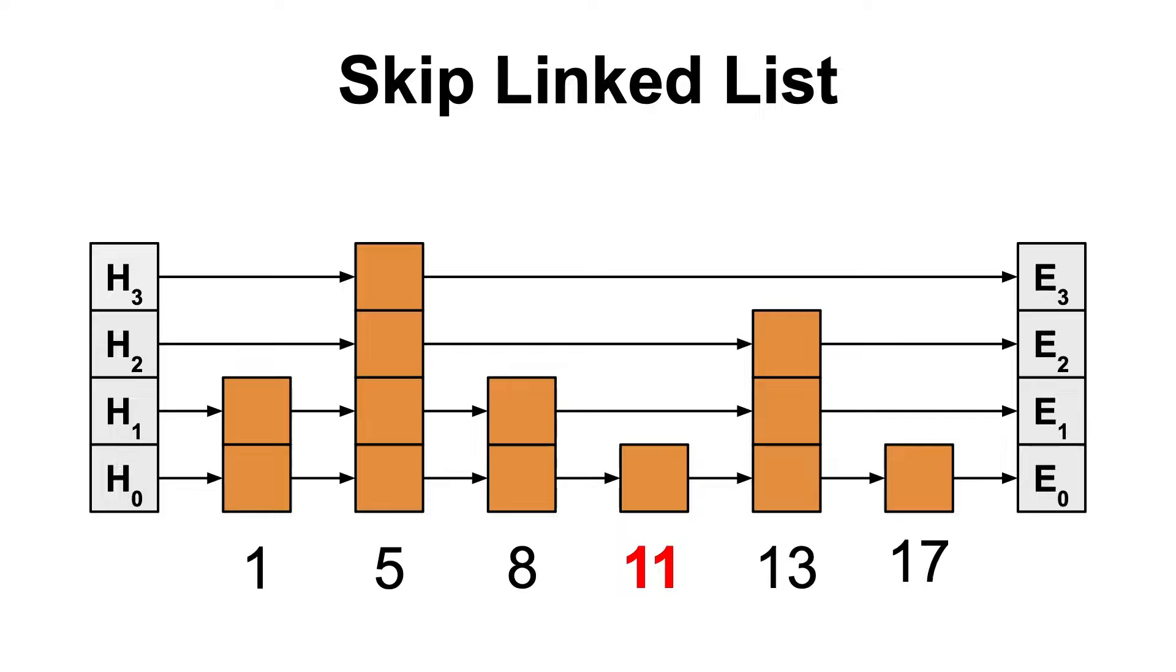So, what do we do? Well, we start at the first node and ask, is the next node higher than 11 or smaller? In this case, the next node is the end node, which means that we have to go down. Now, the next node is 13, which is greater than 11, so we go down again.